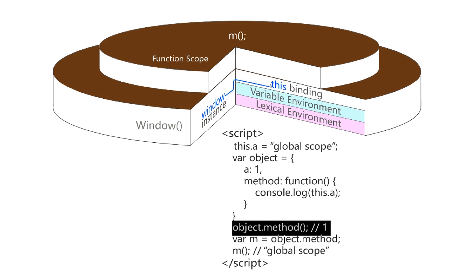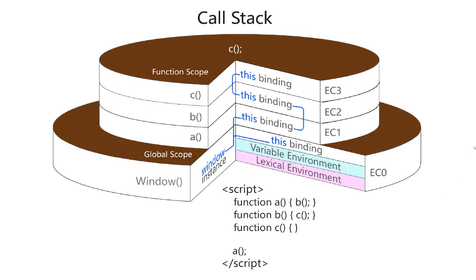Usually you'll have several levels of execution contexts stacked one on top of the other as functions inside functions are being called. And of course, the `this` keyword will continue being bound from whatever context the method was called. You'll have a lot of cases where a function calls another function, just chaining the function calls — in that case you will grow a taller call stack of all these execution contexts.